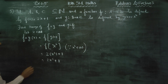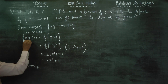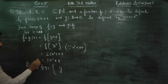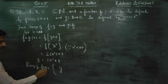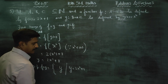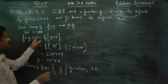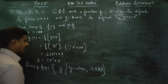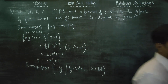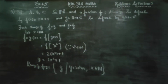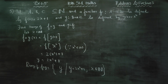Range is the final answer. Range of F dot G is equal to the set of y such that y equals 2x squared plus 1, where x belongs to natural numbers. This is the second part.